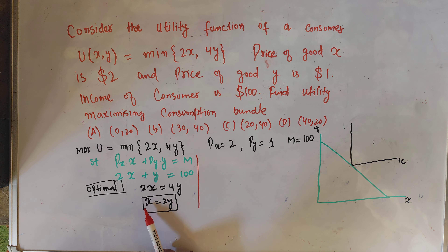Why don't we consume at a different point? If we increase the units of good x to 50 while keeping good y at 20, the utility will be minimum of (2 × 50) and (4 × 20), which is minimum of 100 comma 80. The minimum of 100 and 80 is 80 — our utility does not increase.